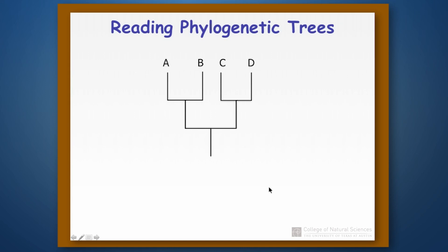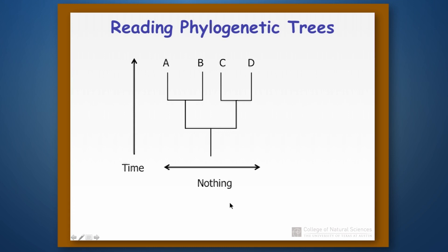Something that can be tricky about reading phylogenetic trees is that the order in which things appear at the tips often means absolutely nothing. What really matters is the relationships through the actual branches on the tree. One dimension on the tree represents time, flowing from the root up to the tips where we have our present-day species. The other dimension actually means nothing — it's just there so we can see the relationships. If we made a phylogenetic tree one-dimensional, all the branches would lay on top of each other and we wouldn't be able to see the relationships. So we use that axis to spread things out, but it tells us nothing about how closely related different species are to one another.